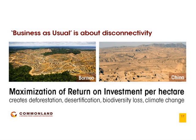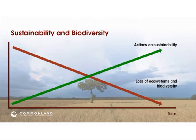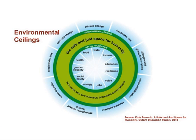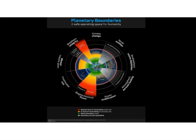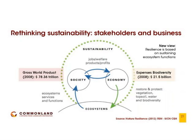It's about really working on sustainability—the link between sustainability and biodiversity. We need to take actions on sustainability and fight the loss of ecosystems and biodiversity. It's all about the environmental ceilings on our planet Earth. You may recognize the picture of the planetary boundaries—the social and environmental boundaries. What we believe is that it's about rethinking sustainability: how to involve the business community and link society, business, and ecosystems in a sustainable long-term way.